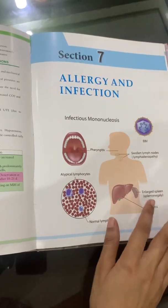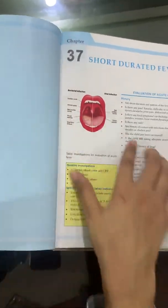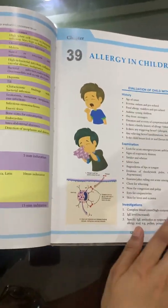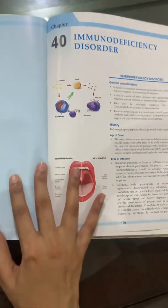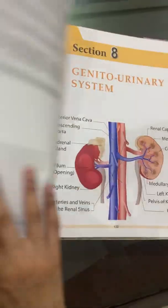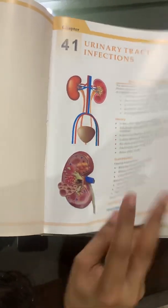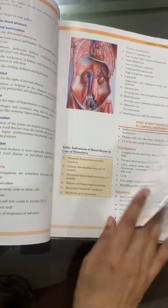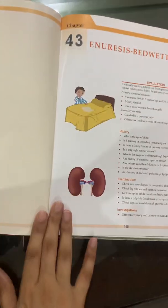Section 7 consists of Allergy and Infection — it consists of short-duration fever, persistent fever, allergy in children, and then immunodeficiency disorders. Section 8 consists of the Genitourinary System — it consists of urinary infections in children, hematuria and proteinuria, and different diseases associated with these symptoms, with investigation and history findings discussed.